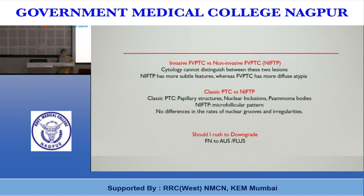Should you rush to downgrade to the AUS/FLUS category if you see grooves or a repeat aspirate might show nuclear holes? When you are not sure, it is not necessary to downgrade. You can stick to your criteria, and more importantly, inform the surgeon there is a possibility of NIFTP and keep the case in the follicular neoplasm category.